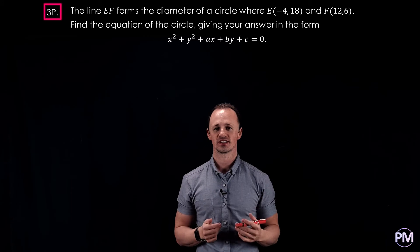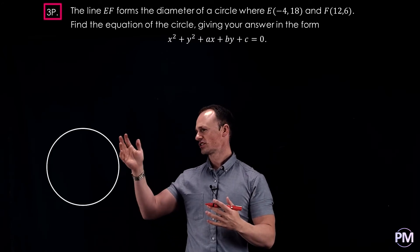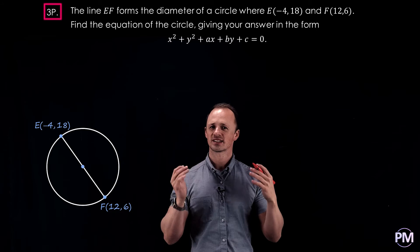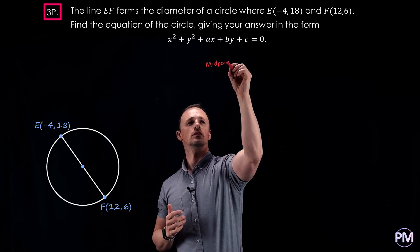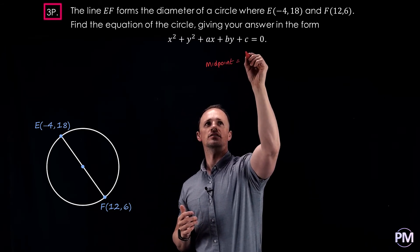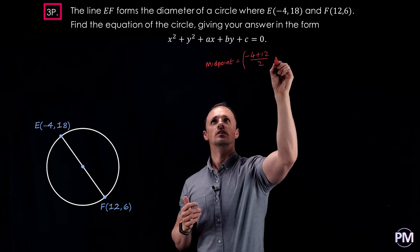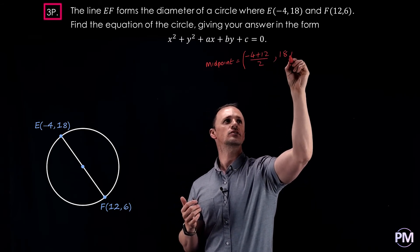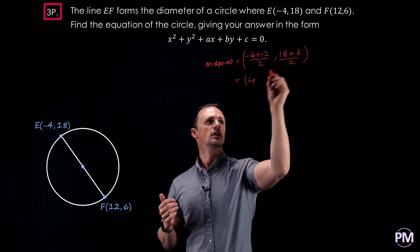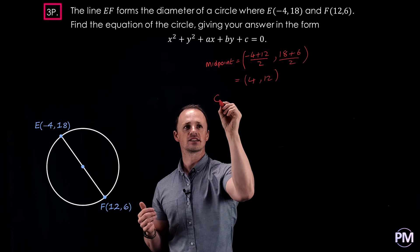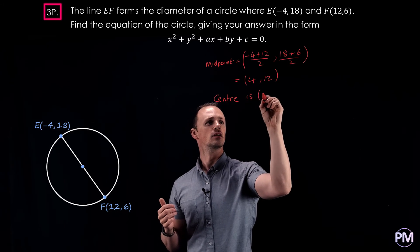In this example we've got two points on the diameter of a circle and we're going to find the equation of that circle. Like in the last example, the centre must be the midpoint of those two points. The midpoint: x coordinates added together are minus 4 plus 12, divide by 2; y coordinates are 18 plus 6, divide by 2. That gives us 8 over 2 which is 4, and 24 over 2 which is 12. So our centre is at (4, 12).